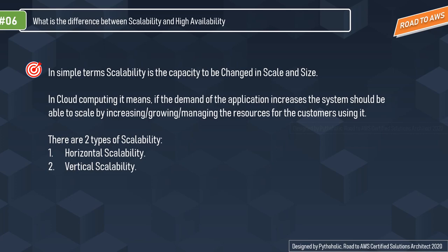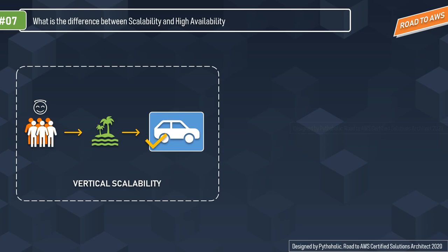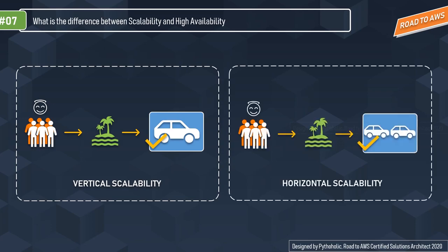In cloud terms we have two types of scalability: horizontal and vertical. When demand increased and we got a bigger car, in technical terms our application is getting more traffic and can't cope, so we scale up by increasing the capacity of existing hardware — for example, adding processing power, increasing RAM from 2 GB to 16 GB, or upgrading from an i3 to i7 processor. That's vertical scalability.